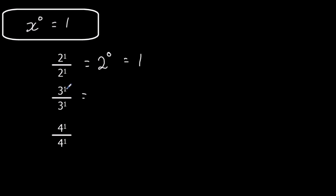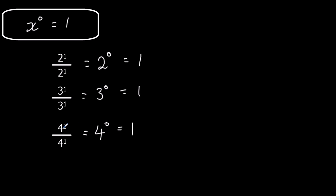This works for any number. Three to the power of one divided by three to the power of one — if we follow the rules of indices and subtract the powers, that's three to the power of zero, and three divided by three is one. Same with four: four to the power of one divided by four to the power of one is four to the power of zero, and four divided by four is one. So anything to the power of zero is one.